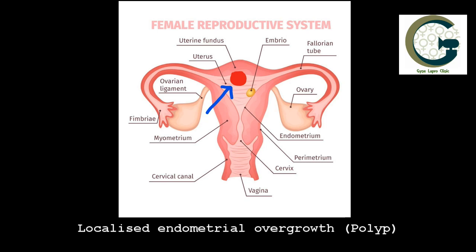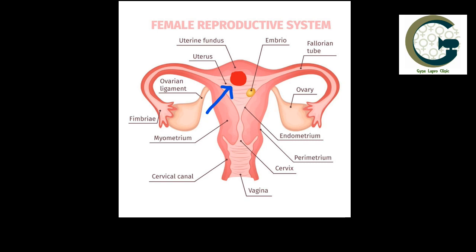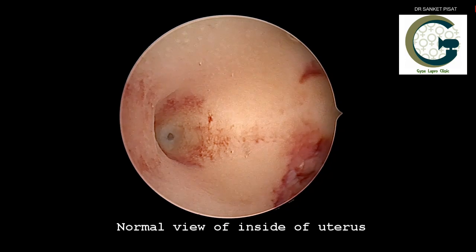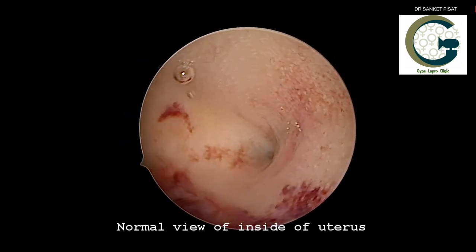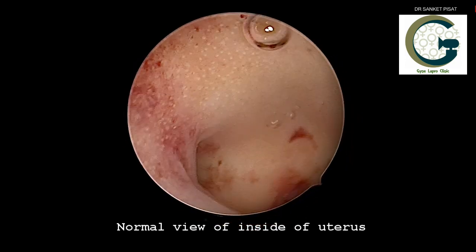Sometimes a localized endometrial overgrowth, which is called as a polyp, prevents this from happening and prevents the embryo from implanting or growing inside the uterus, causing infertility.